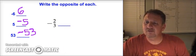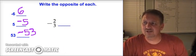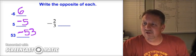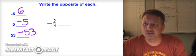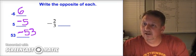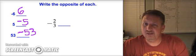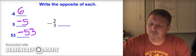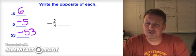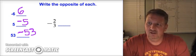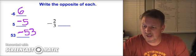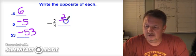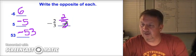Now we have negative two-thirds — a fraction. It's not that difficult. Negative two-thirds is to the left of zero because it's negative, so its opposite is going to be to the right of zero, making it positive. It's the same distance, so if negative two-thirds is two-thirds of a unit from zero to the left, its opposite is positive two-thirds.